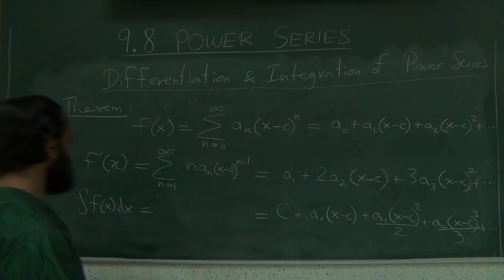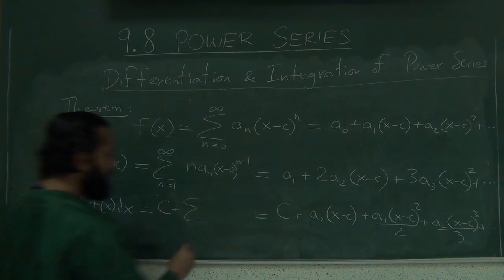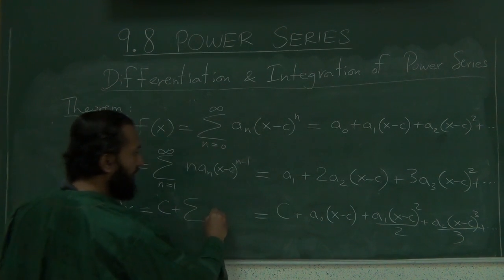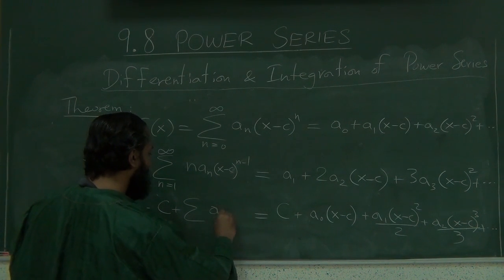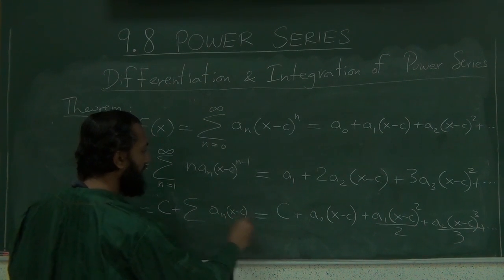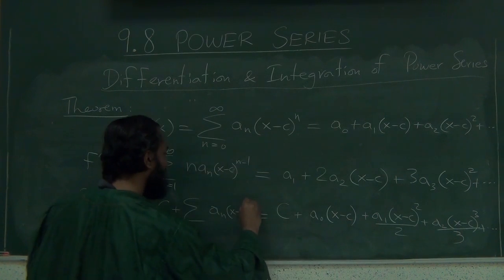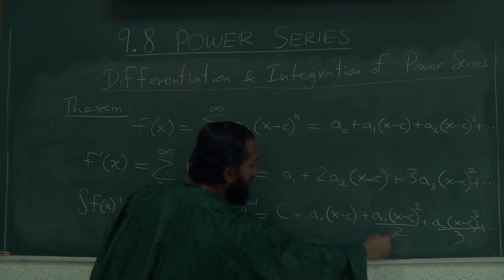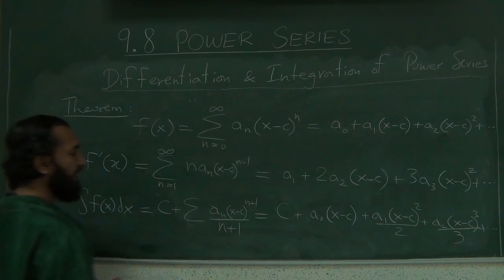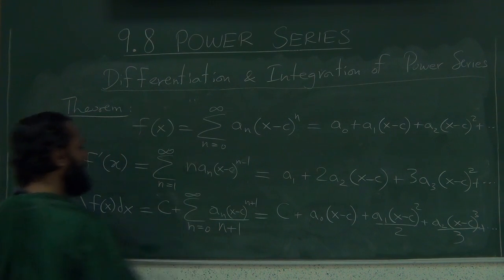So let's write this down. This is c plus the summation of a_n (x minus c) to the, so the power here is one more than the subscript, right? n plus 1. So the denominator is one more than the subscript. So n plus 1 and n starts at 0 to infinity, okay?